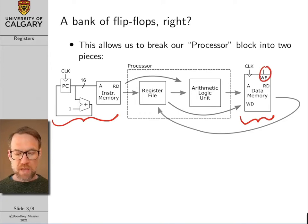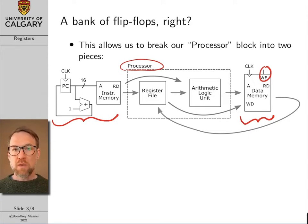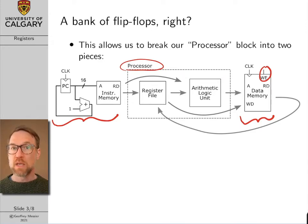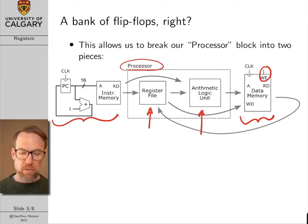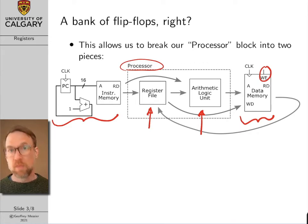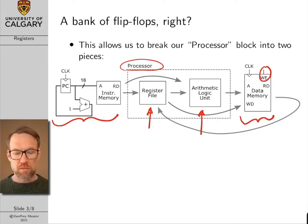In the middle we still had just a block called the processor. Now we're going to start adding detail to that middle block, breaking it into two pieces. The first piece is the register file — this small area of high-speed memory — and the second piece is the arithmetic logic unit, or ALU. We'll get into the ALU in a lot more detail in coming lectures, but for now understand it as a digital block that does calculations like addition and subtraction.